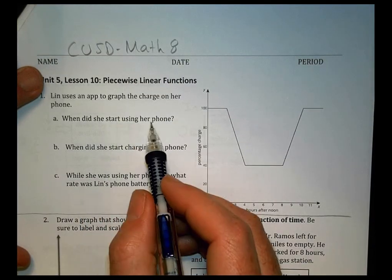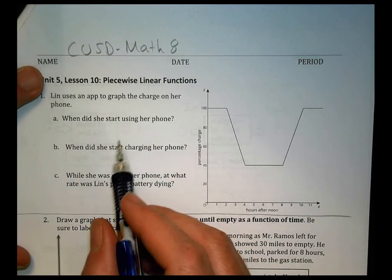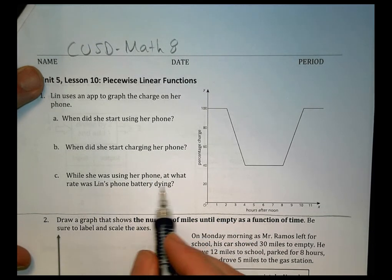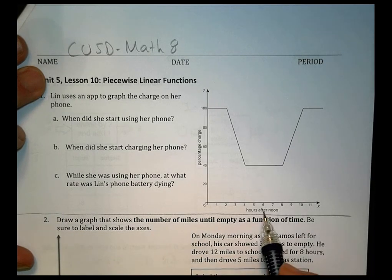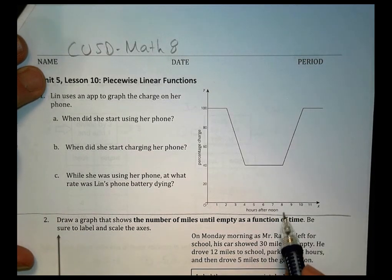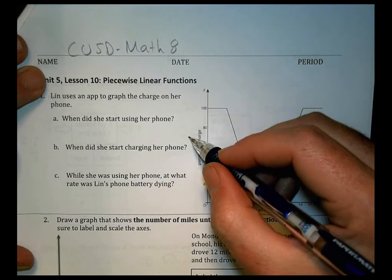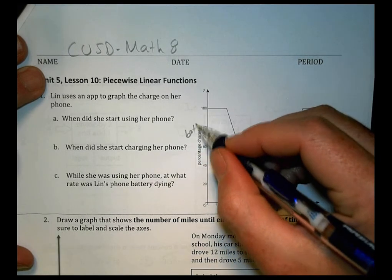It wants to know, when did she start using her phone? When did she start charging her phone? And while she was using her phone, at what rate was Lynn's battery phone dying? And we can see here, this is hours after noon, and we have a percentage of change. So this is kind of the battery life, or charge. So battery charge.